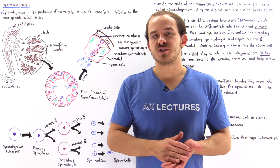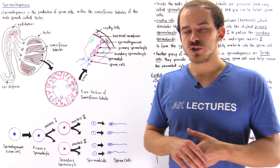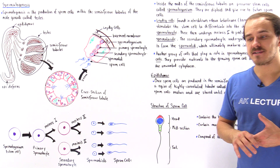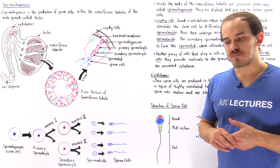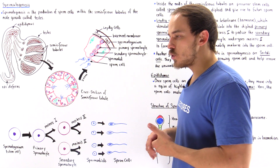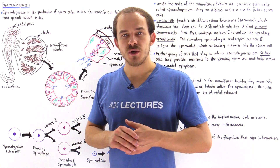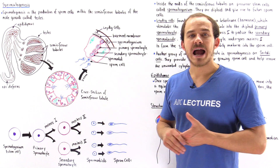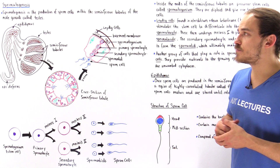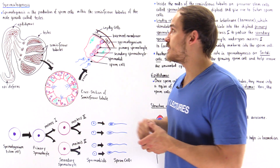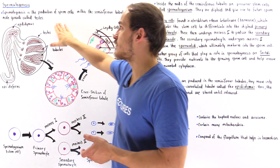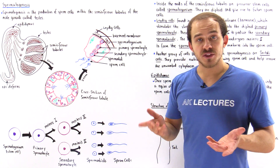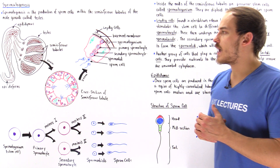In humans, the specialized organs involved in reproduction are known as the gonads, and the male gonads are known as testes. Inside the testes are specialized tubules known as seminiferous tubules, and inside the seminiferous tubules is where sperm cells are actually formed. The process by which sperm cells are formed inside the seminiferous tubules of the testes is known as spermatogenesis, and this will be the focus of this lecture.